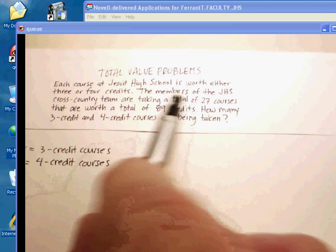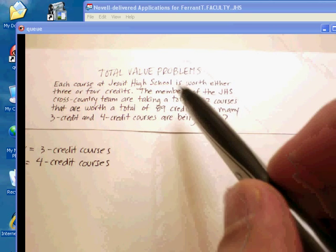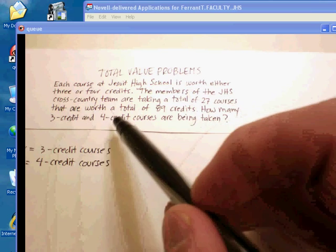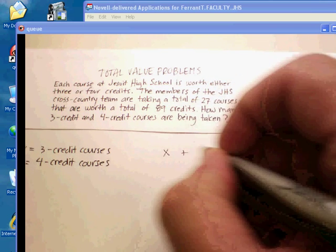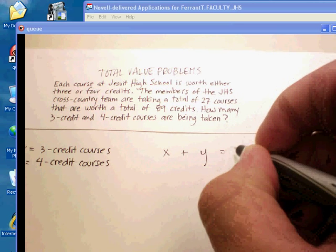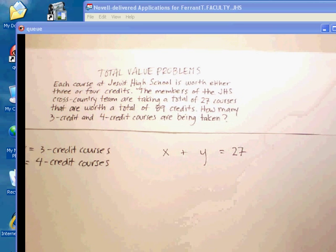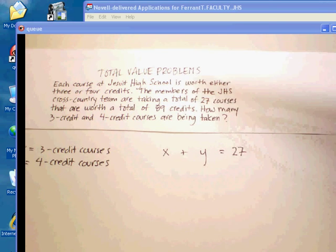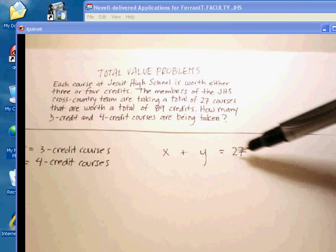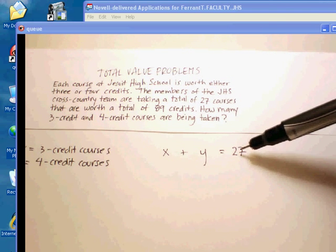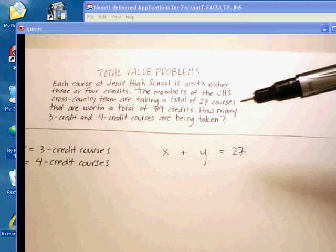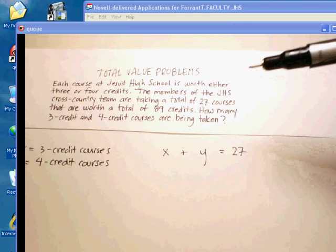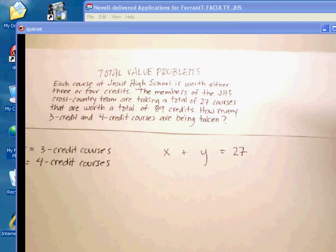When I start translating, I see that they're taking a total of 27 courses made up of three and four unit ones. So I'm going to say X plus Y will equal 27. Let's read that again - I have 27 courses total, and they're made up of three unit and four unit courses. So X plus Y equals 27 will be my first equation in my system.